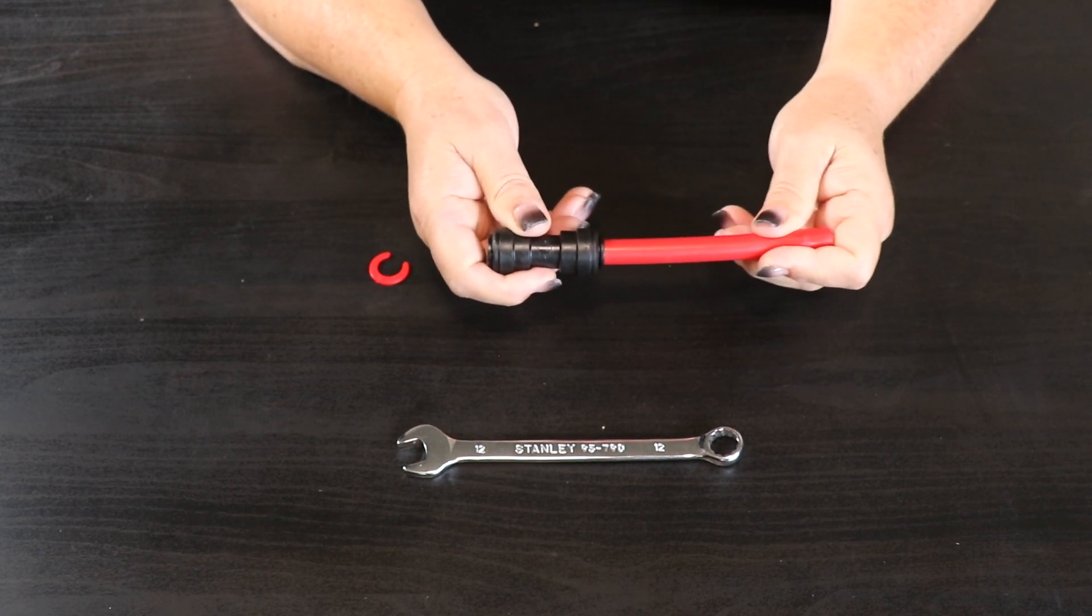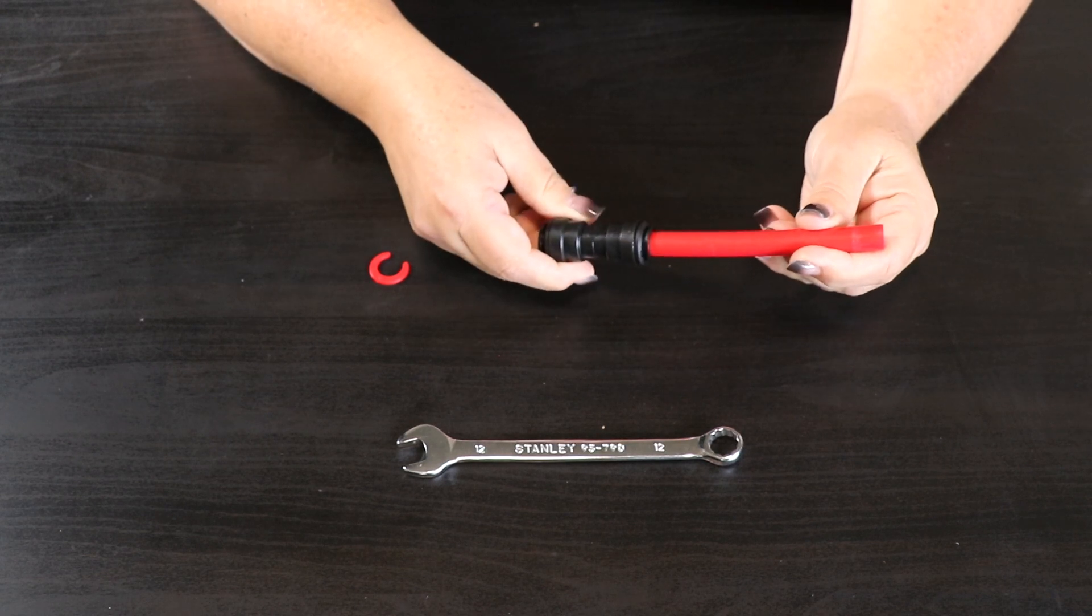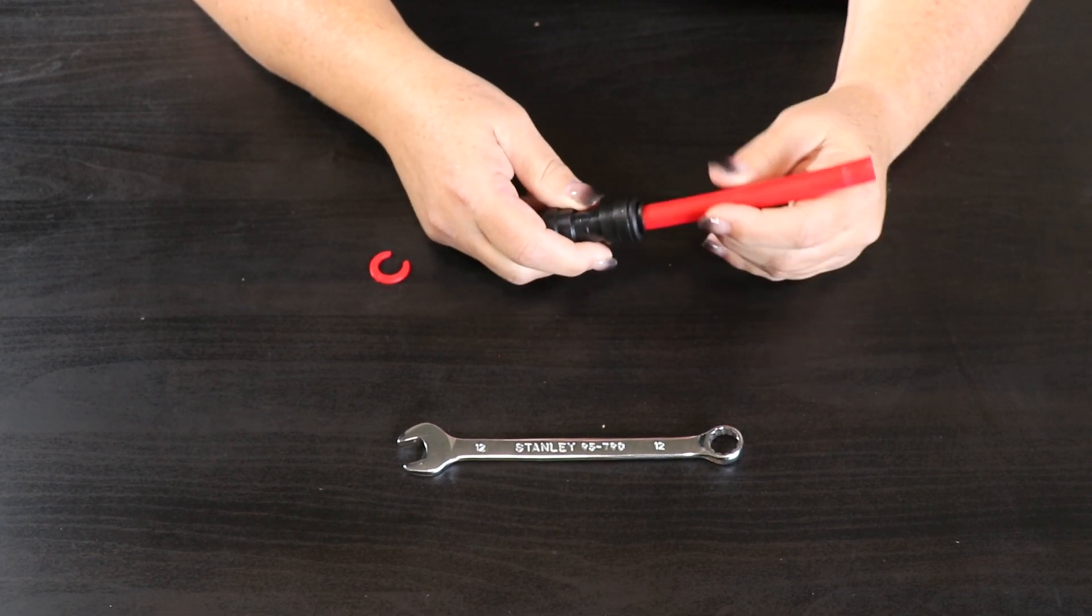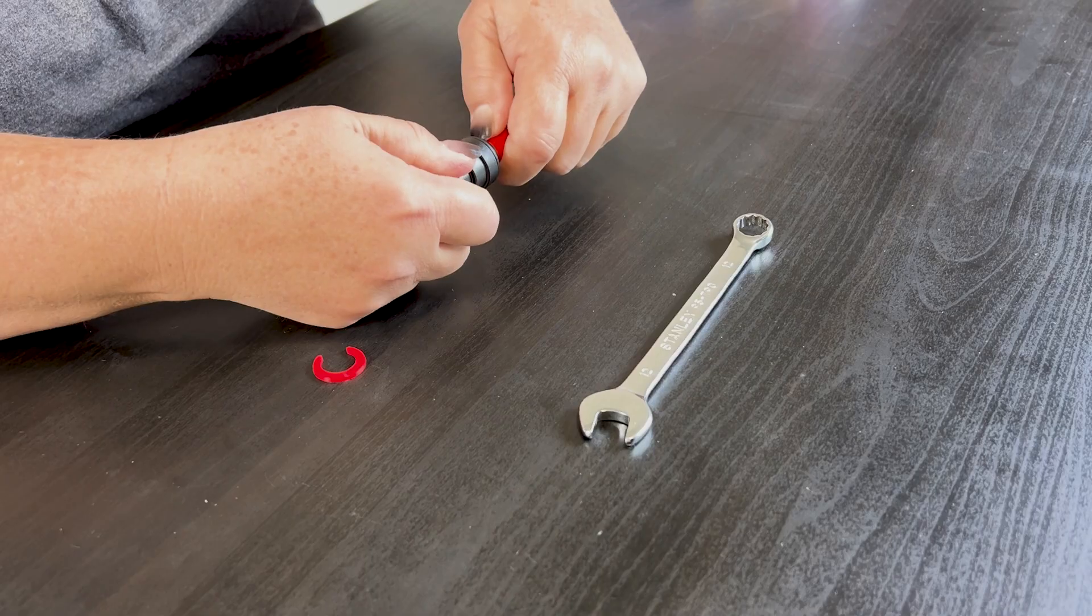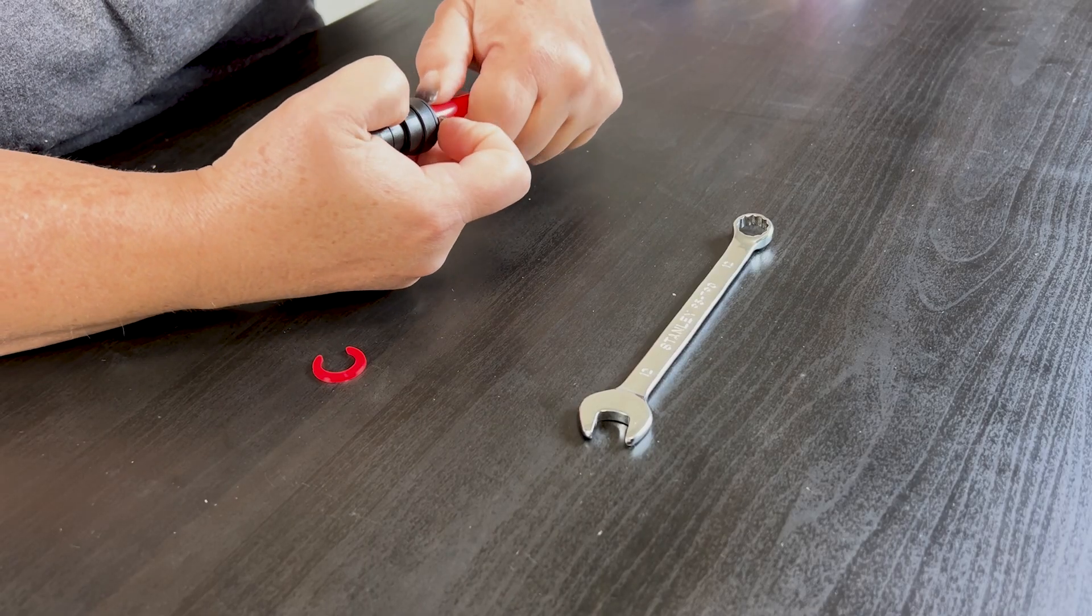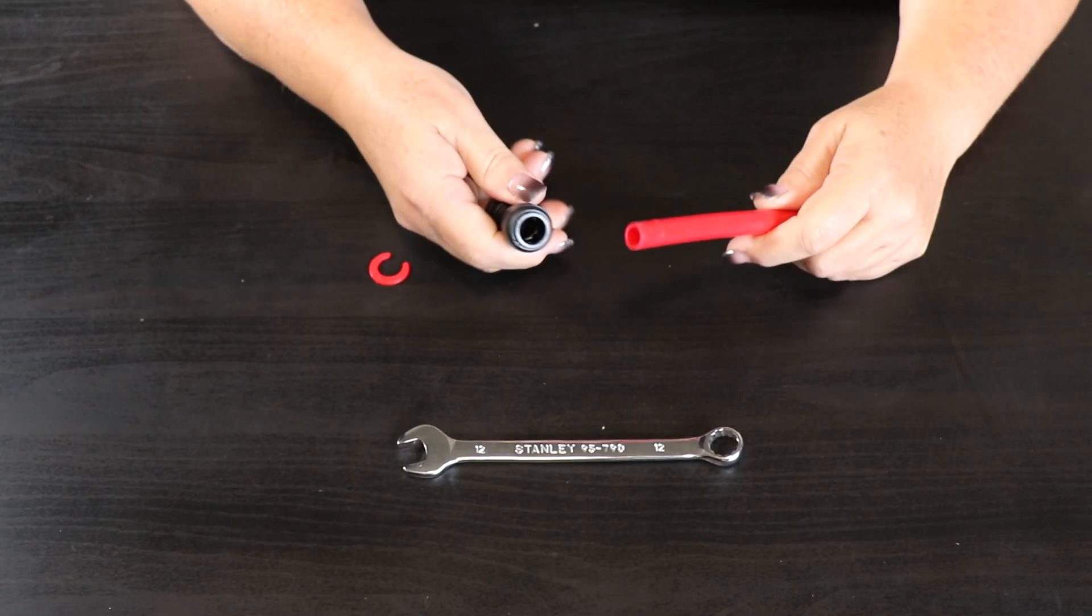Now to get them apart, that little collar right at the edge there needs to be pushed back down towards the fitting. Then it'll release and the tube will come out.